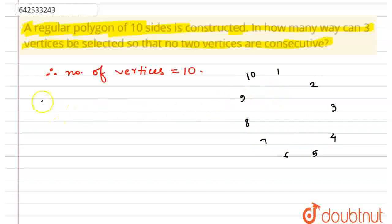So now, among these 10 vertices, 3 need to be selected, so that is 10 choose 3. But that includes cases where 2 vertices are consecutive or even all 3 vertices are consecutive. First, let's find out those choices in which all 3 are consecutive.